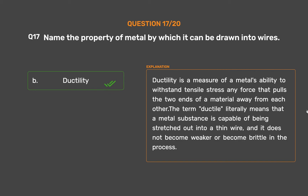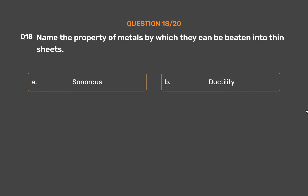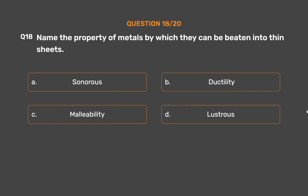The term ductile literally means that a metal substance is capable of being stretched out into a thin wire without becoming weaker or brittle in the process. Question number 18. Name the property of metals by which they can be beaten into thin sheets. Option A: Sonorous. Option B: Ductility. Option C: Malleability. Option D: Lustrous.